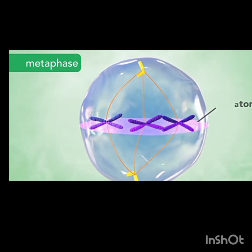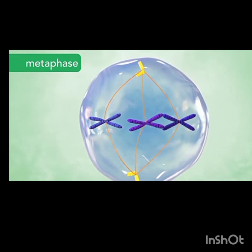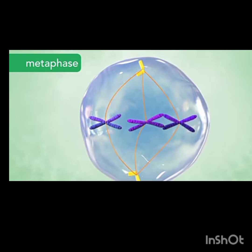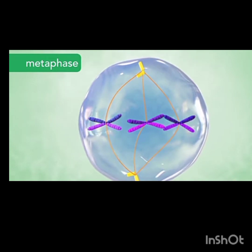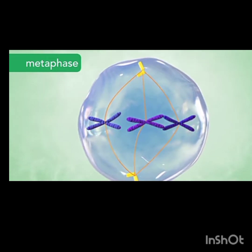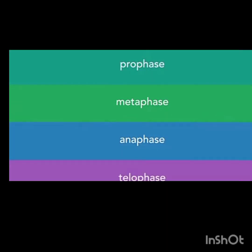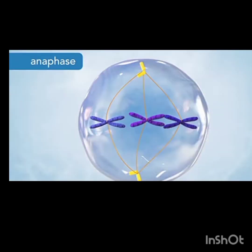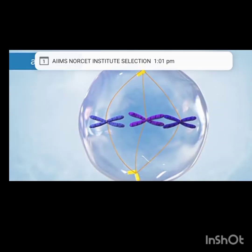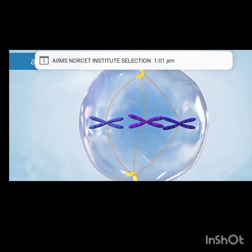In metaphase, the chromosomes are brought to the equator of the cell with the help of the spindle fibers. On either side of each centromere, sister chromatids are present and aligned at the center of the cell.